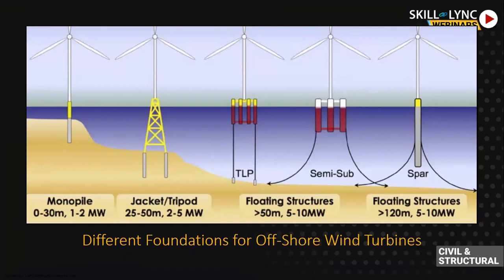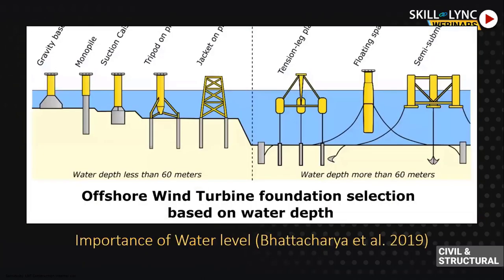We need to determine the output or response of the foundation — how these things behave — and only after that can we go for practical implementation. There are huge chances of accident or catastrophic failure of these geotechnical structures. Water level is very important — at less than 60 meters versus more than 60 meters depth, the design changes. Monopiles are very common; caisson piles, gravity bases, tripods, and tension leg plates are also used. Challenges are different and very site-specific.